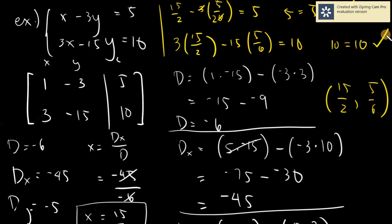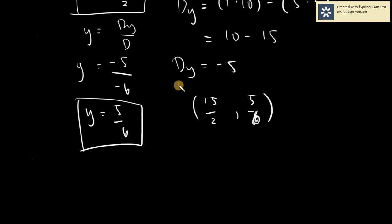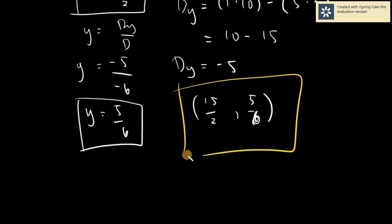Both equations are correct. Therefore our system stands, and our solution of x equals 15 over 2 and y equals 5 over 6 is the exact solution to our given system.